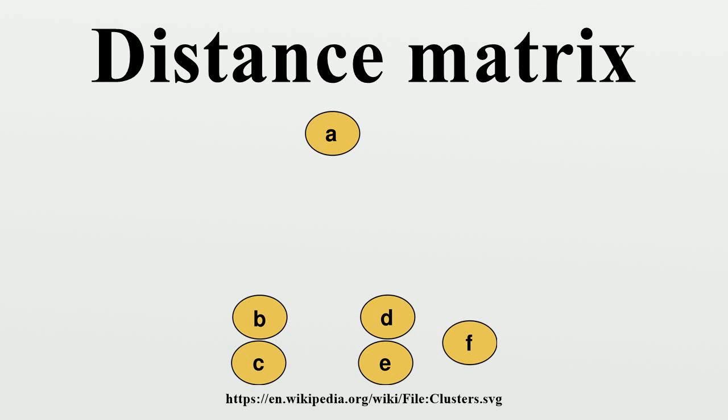In a network, a directed graph with weights assigned to the arcs, the distance between two nodes of the network can be defined as the minimum of the sums of the weights on the shortest paths joining the two nodes.